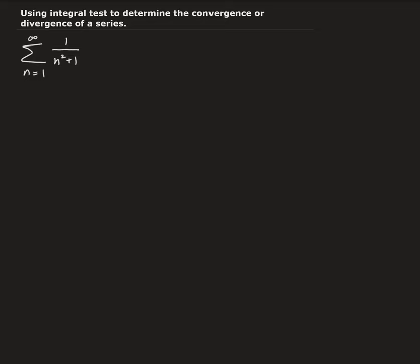In this example, we want to determine whether this series is converging or diverging. We're going to use the integral test. There are three conditions that we need to check before we can apply the integral test. The function corresponding to this series is going to be 1 over x squared plus 1.